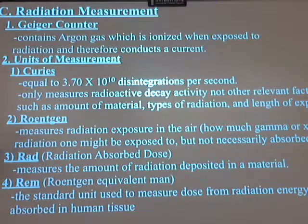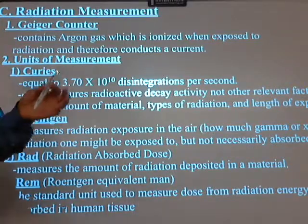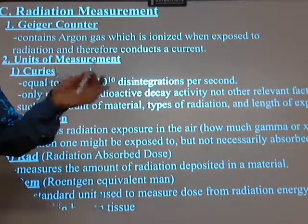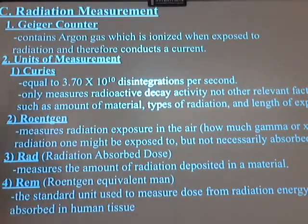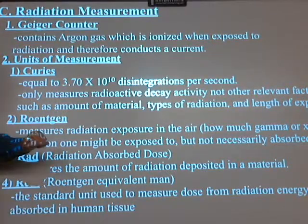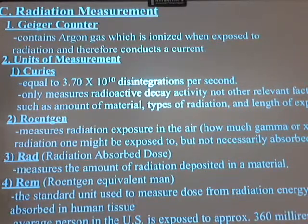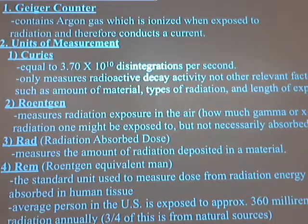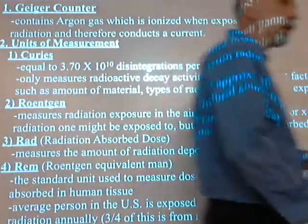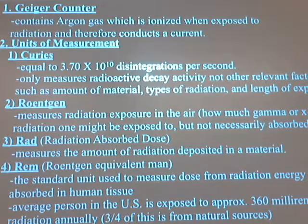The calculations I'm going to do really aren't even nuclear calculations. We've already done calculations for protons, neutrons changing, names of particles changing, and types of radiation given off. Starting tomorrow you're going to do half-life calculations. The average person in the U.S. is exposed to approximately 360 millirems of radiation annually, three quarters of which is natural.